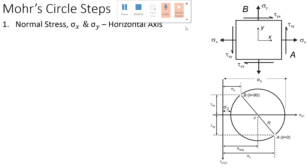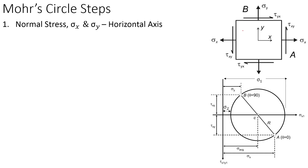Mohr's Circle is used to see the combined effect from multiple types of stresses — for example, normal stress in the x-axis (σx), normal stress in the y-axis (σy), and shear stress in the xy-plane (τxy). Mohr's Circle is the easiest, most convenient, and most popular way to calculate the combined effect from these multiple normal and shear stresses.